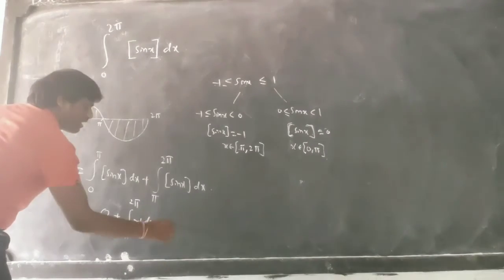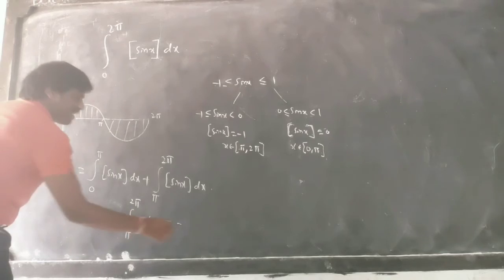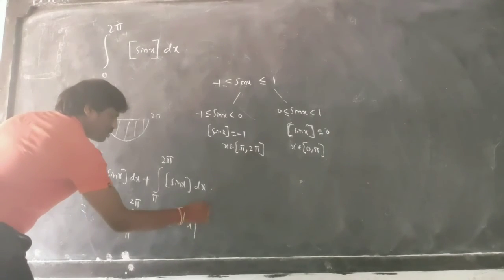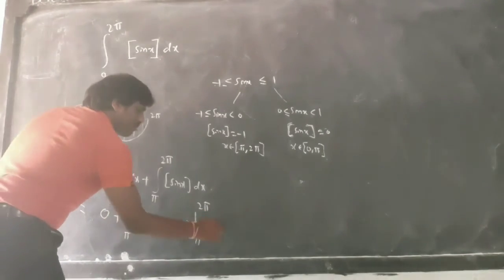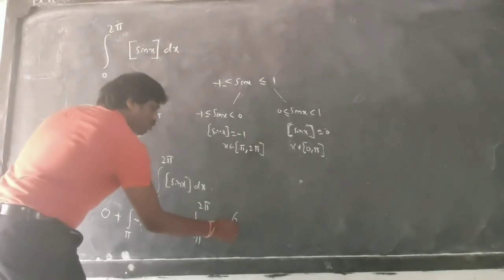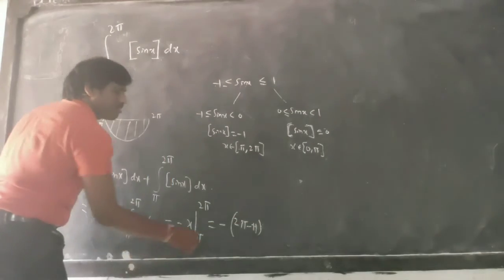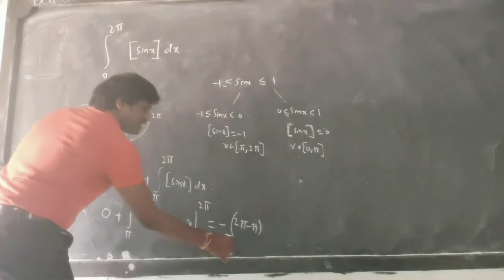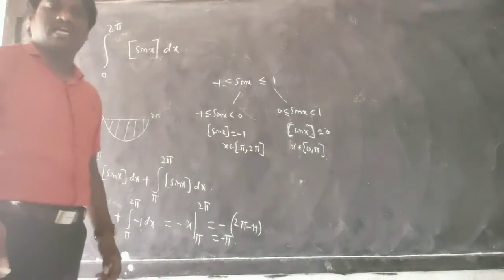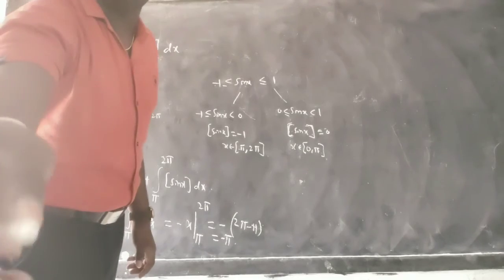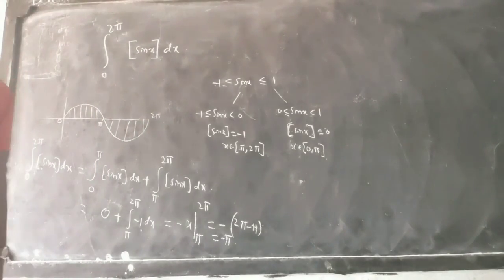Simplifying: -1 comes out, the integral of 1 is x, and substituting the limits 2π and π gives -(2π - π), which equals -π. So the answer is -π. If you have any other doubts in definite integration, you can ask and I will make videos to answer them.